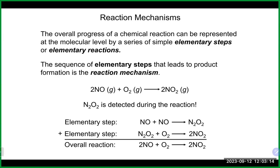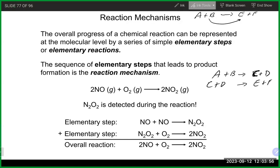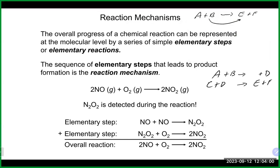A reaction mechanism is a probable explanation for how a reaction takes place. Not all reactions are one-step processes — they may occur in multiple steps. For example, A + B → C + D, then C + D → E + F. When these elementary steps are added together, species appearing on opposite sides of the arrow cancel, giving the overall reaction A + B → E + F.